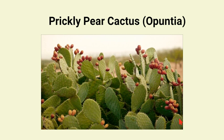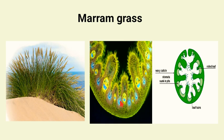We have an example of prickly pear cactus, which is called Opuntia. Their leaves are reduced into spines, and these leaf-like structures are actually modified stems known as phylloclades. These morphological adaptations help xerophytes to conserve water and to live in xeric conditions.